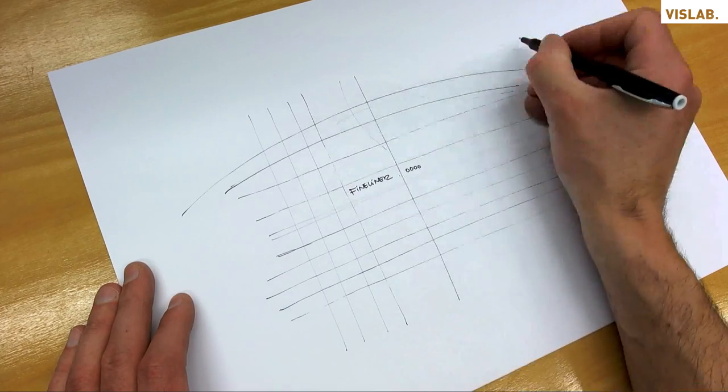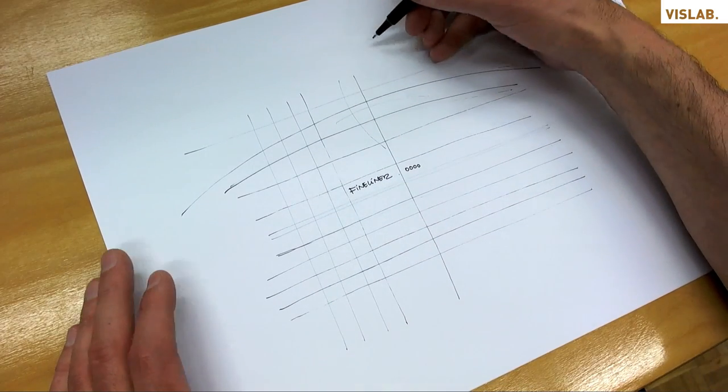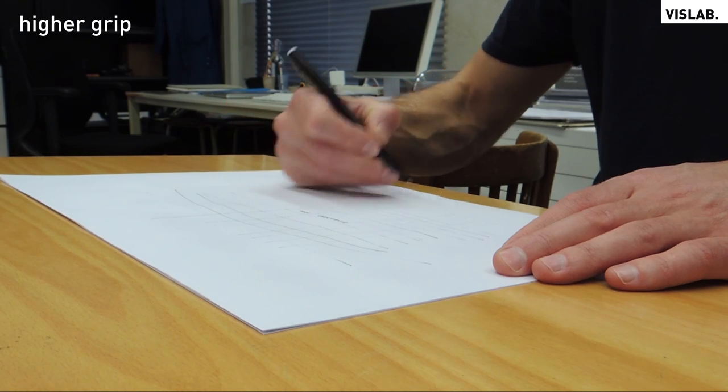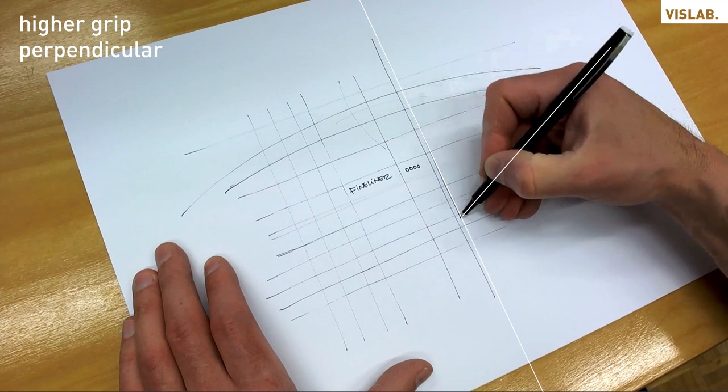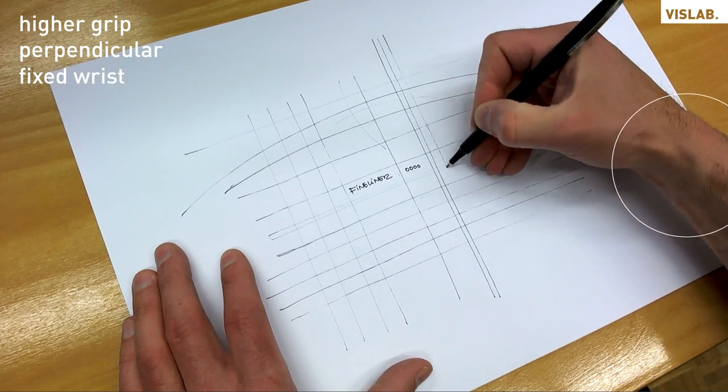So if you want to improve your basic sketching skills, practice the following three principles: Hold your pen further from the tip and relax your muscles. Point your pen perpendicular to the direction of the line you want to draw. Minimize any rotation of your wrist.